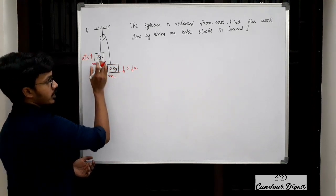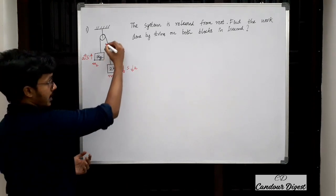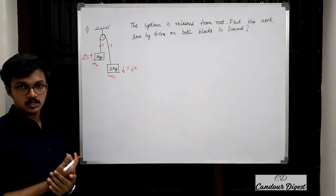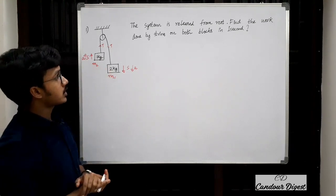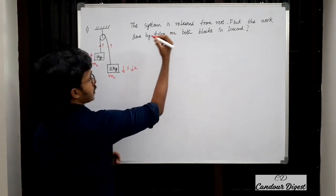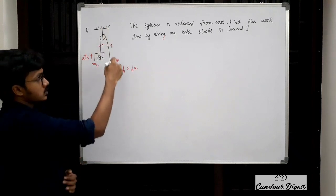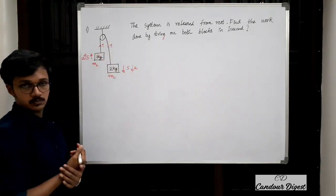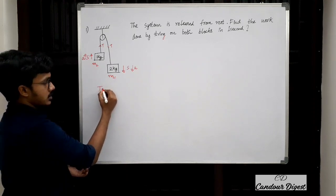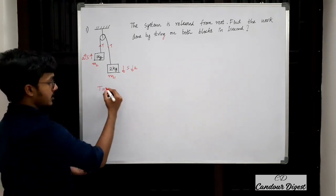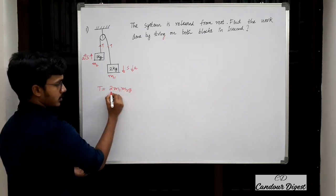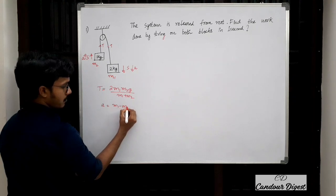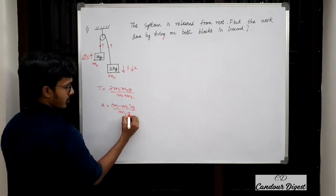Due to masses M1 and M2, there will be a tension in the string acting vertically upwards. Since it is the same string, the tension will be the same throughout. In a pulley block system, tension T = 2·M1·M2·g / (M1 + M2), and acceleration A = (M1 − M2)·g / (M1 + M2). We take g ≈ 10 m/s².